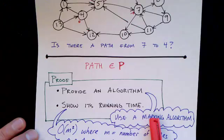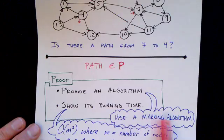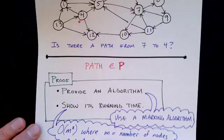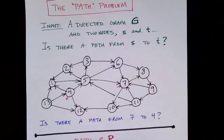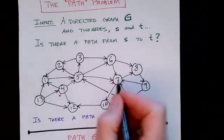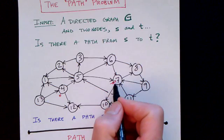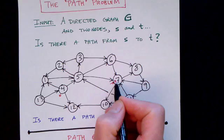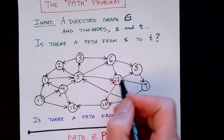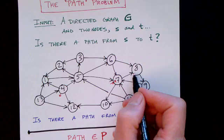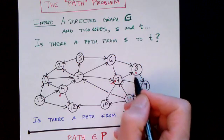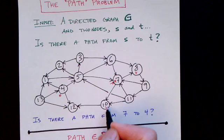So one thing we can do for the algorithm is use a marking algorithm. And the algorithm to solve this is we basically start with 7 and we mark it. And then we ask which nodes can we reach from 7? Well, we can reach 8 and we can reach 10. So we mark those.